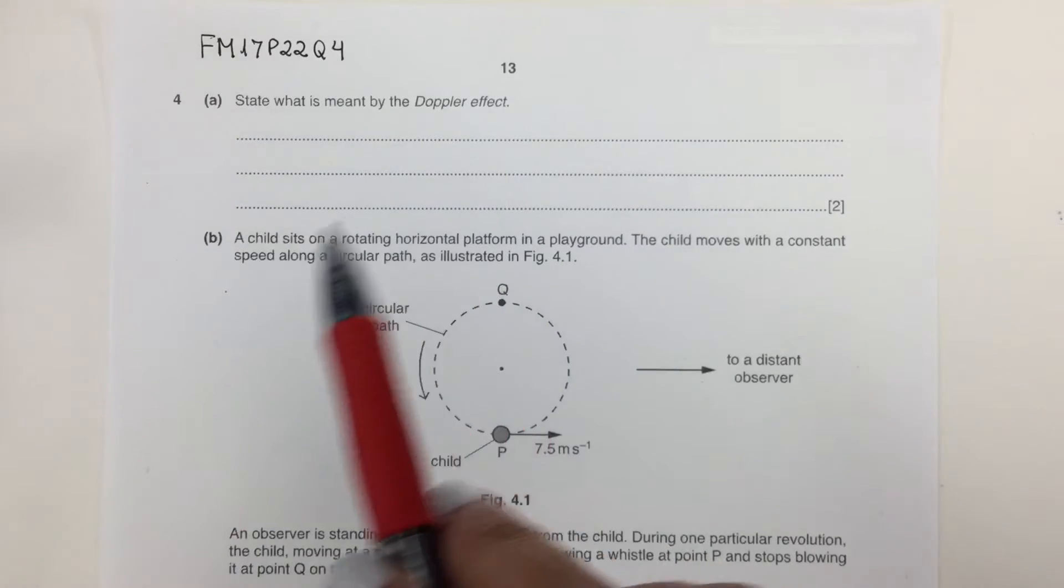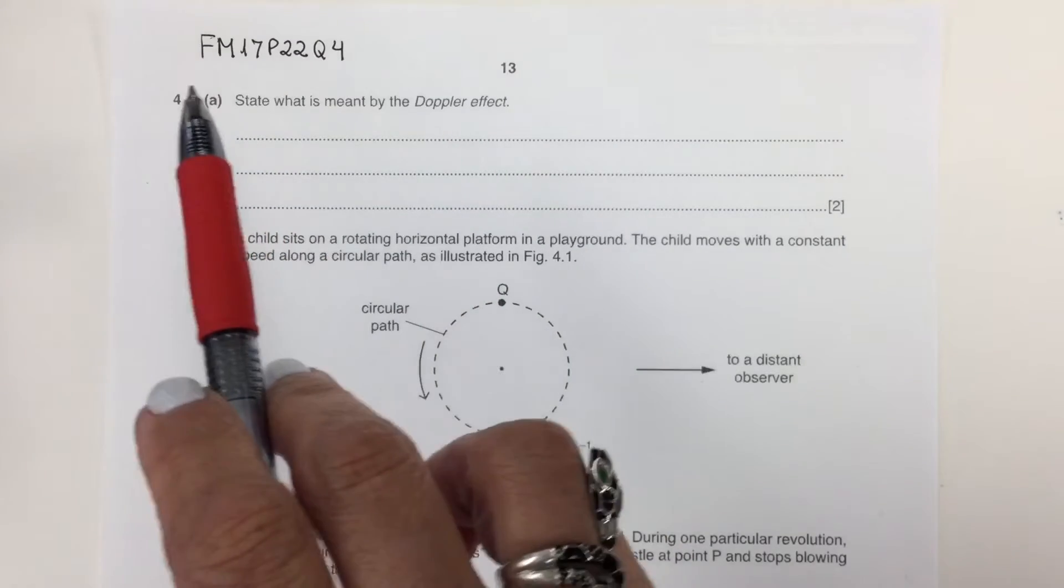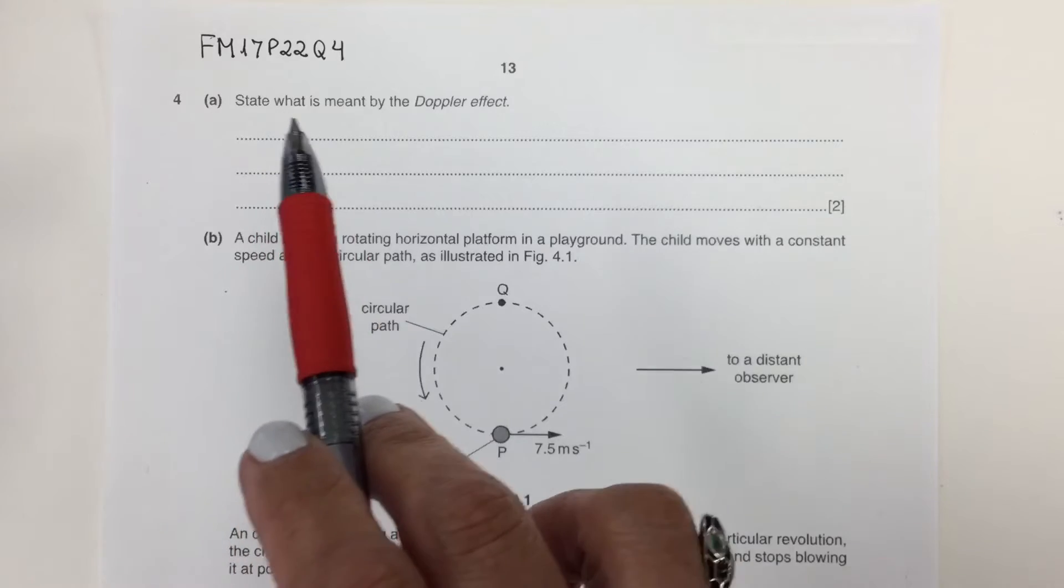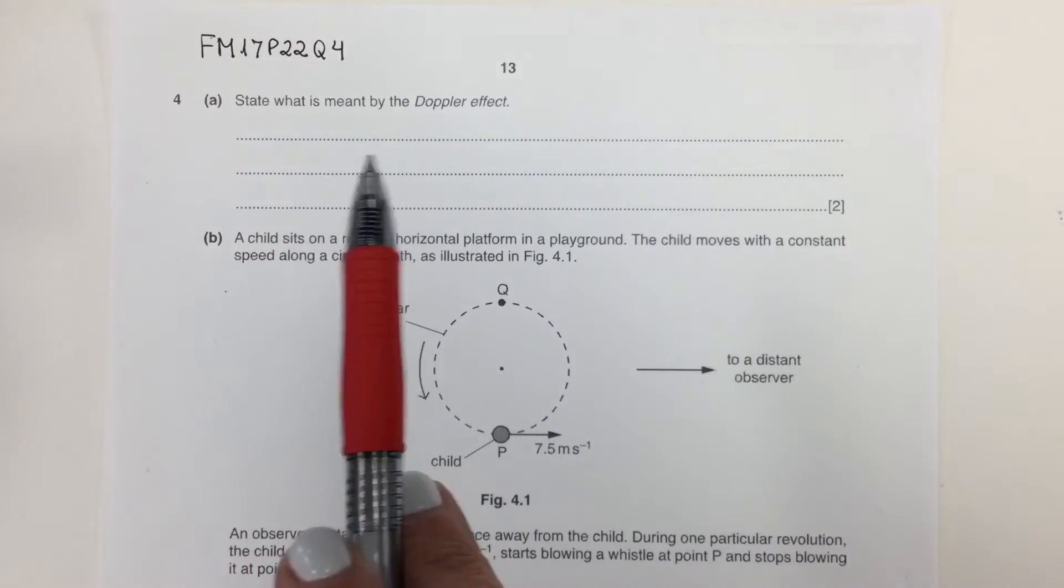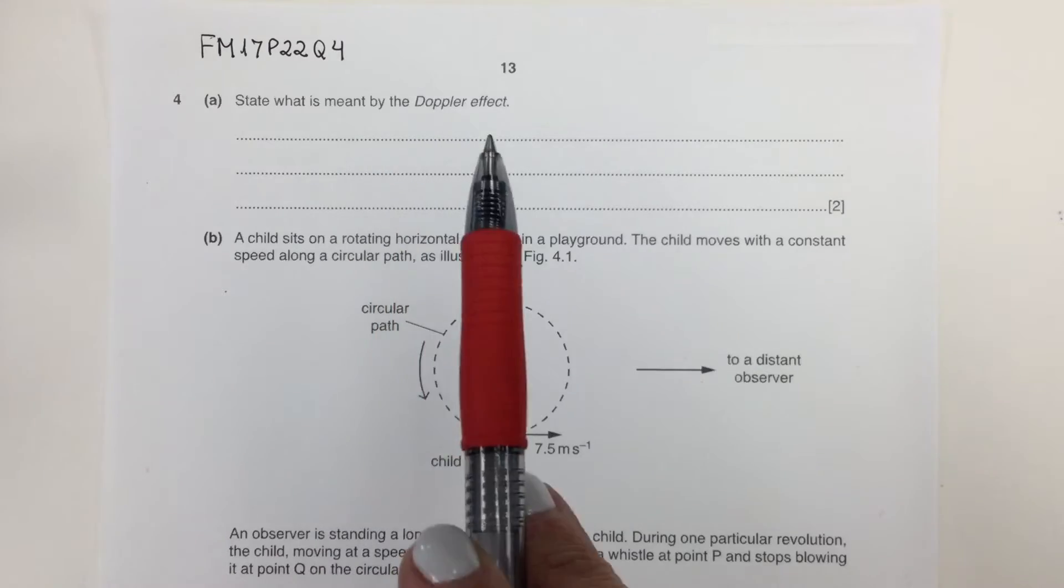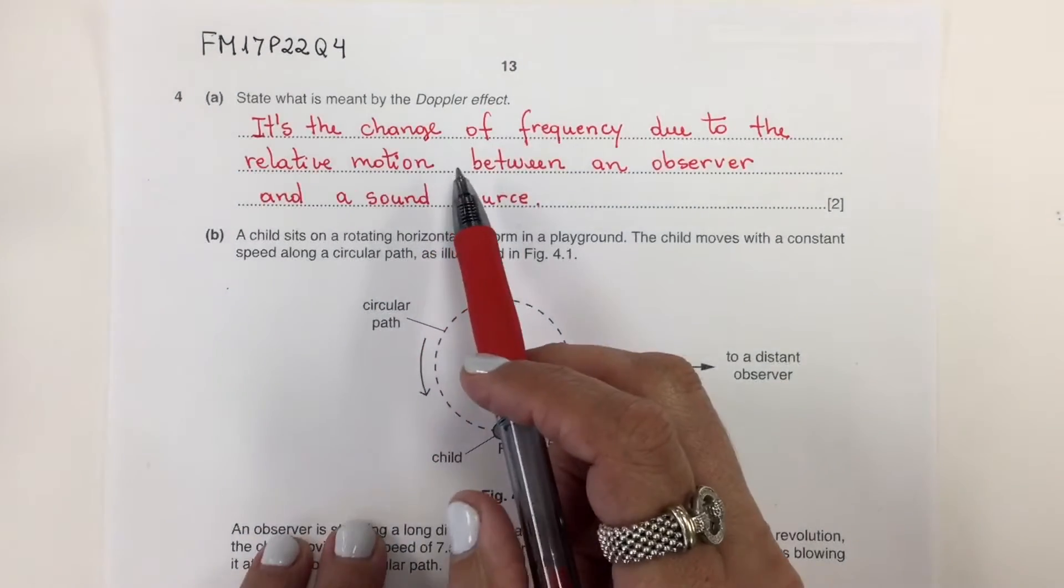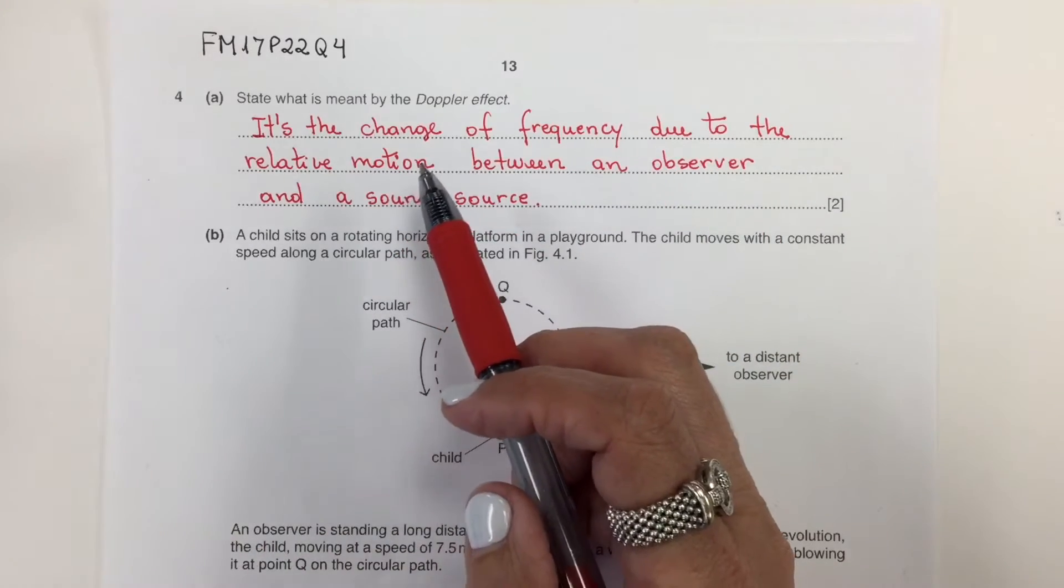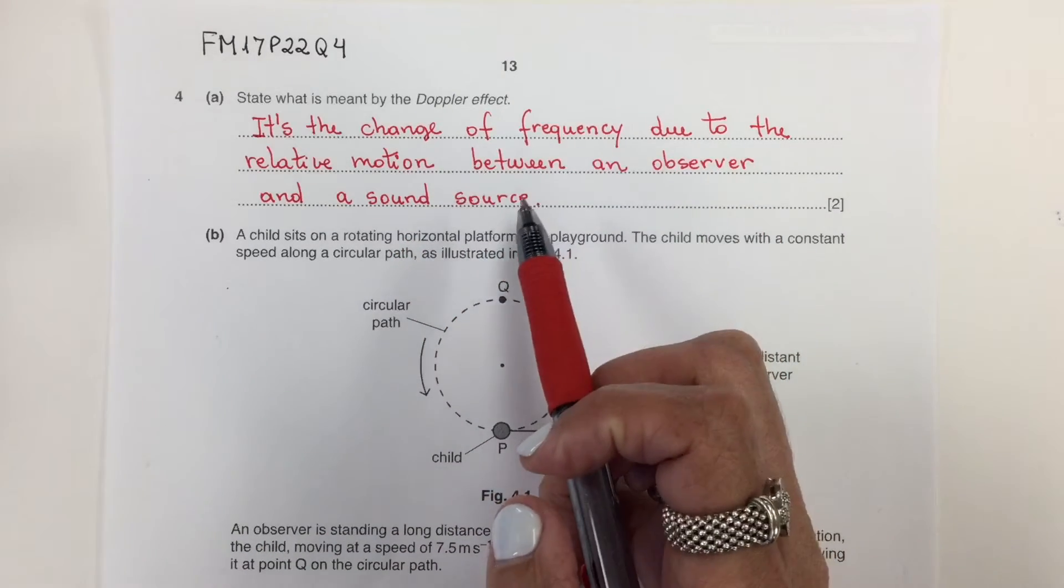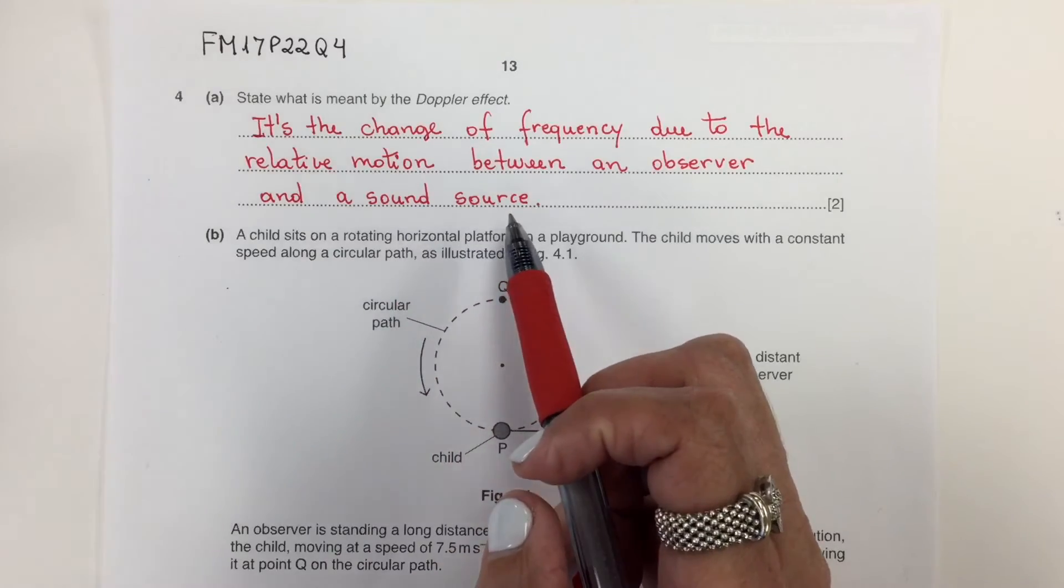This question is from February-March 2017, paper 22, question 4. State what is meant by the Doppler effect. It is the change of frequency due to the relative motion between an observer and a sound source.